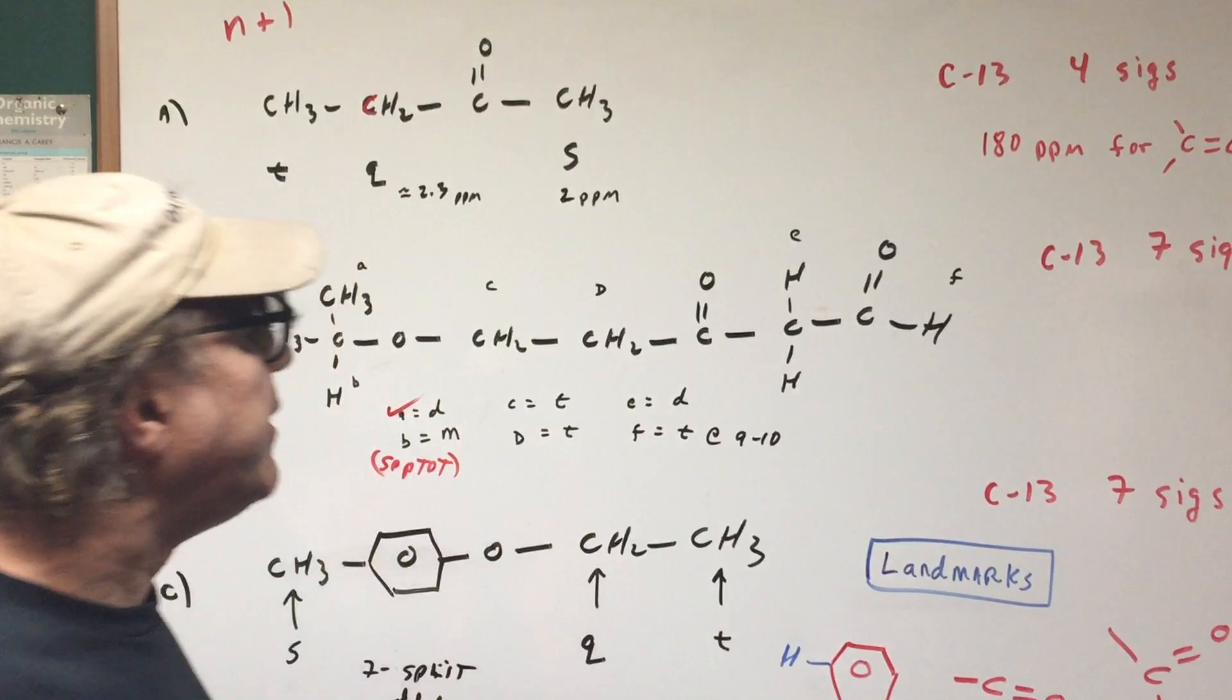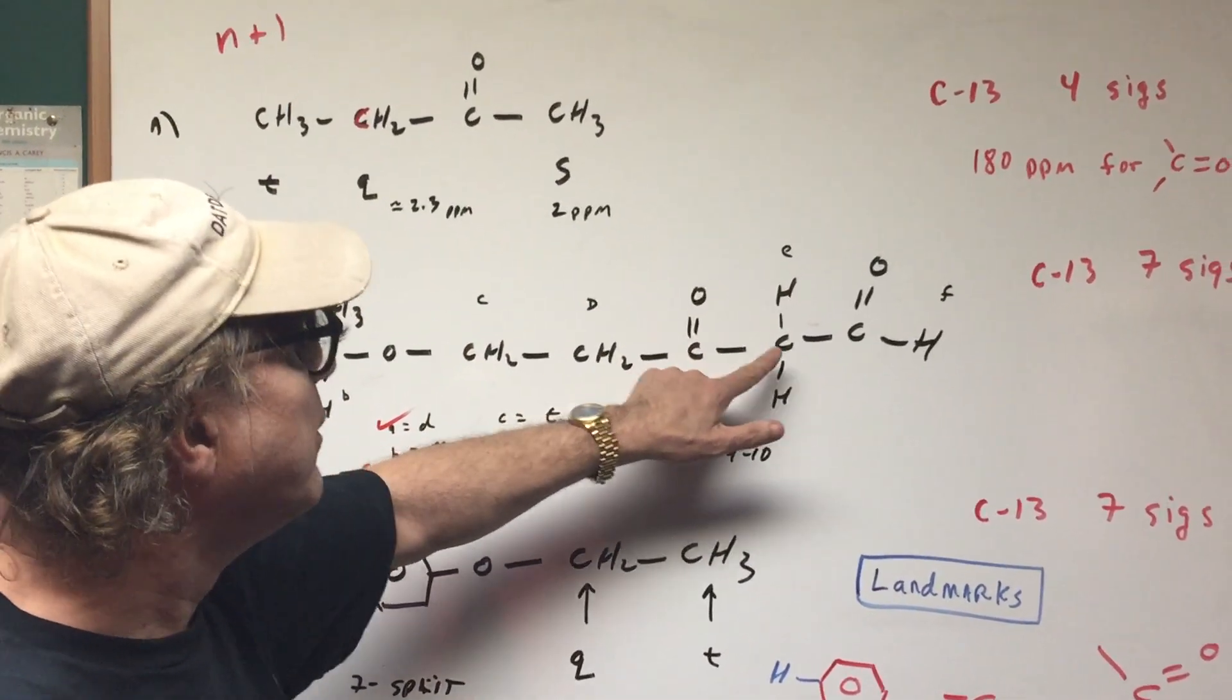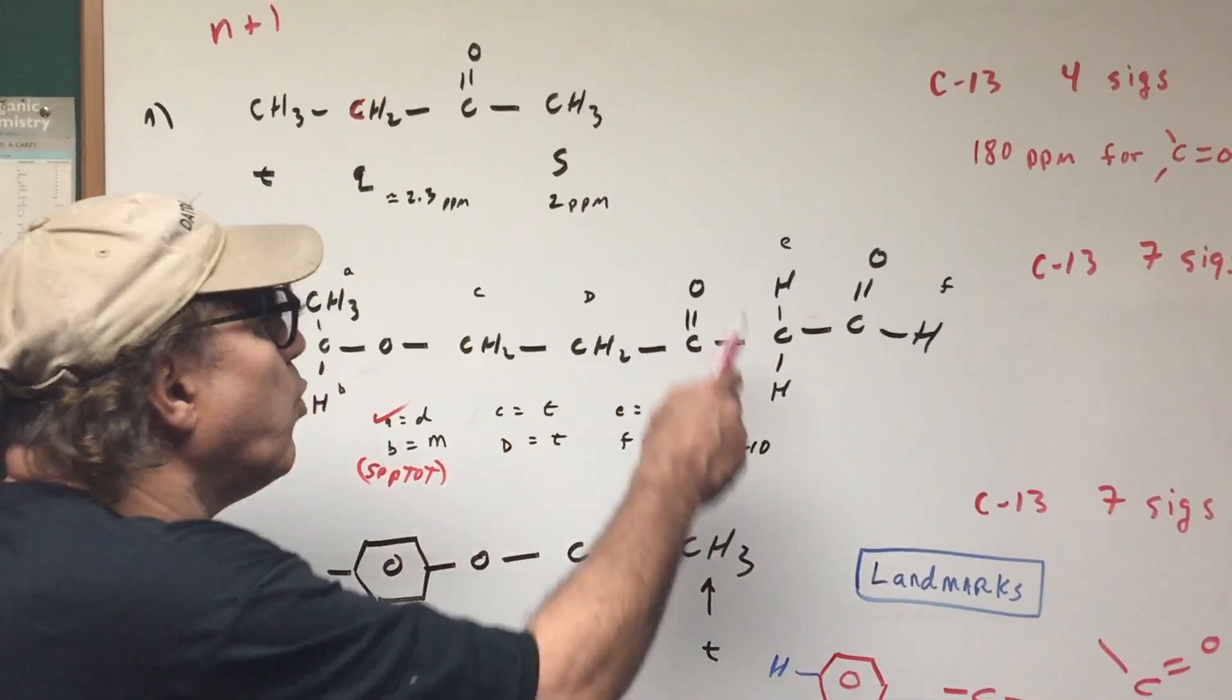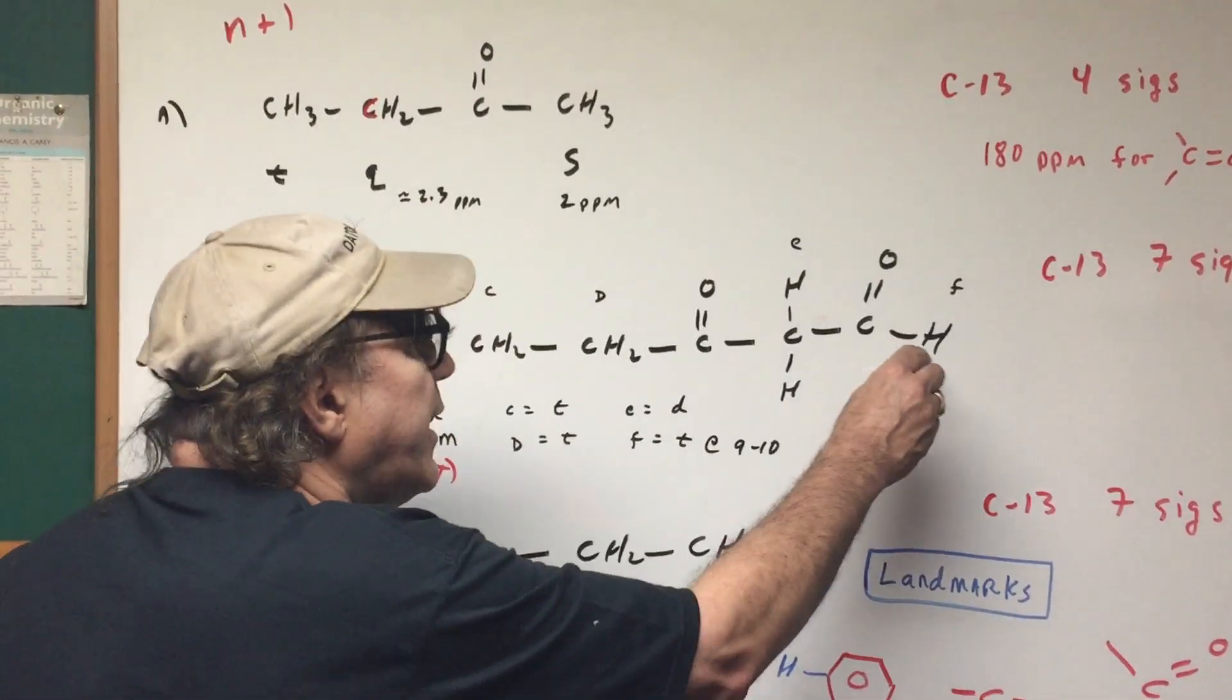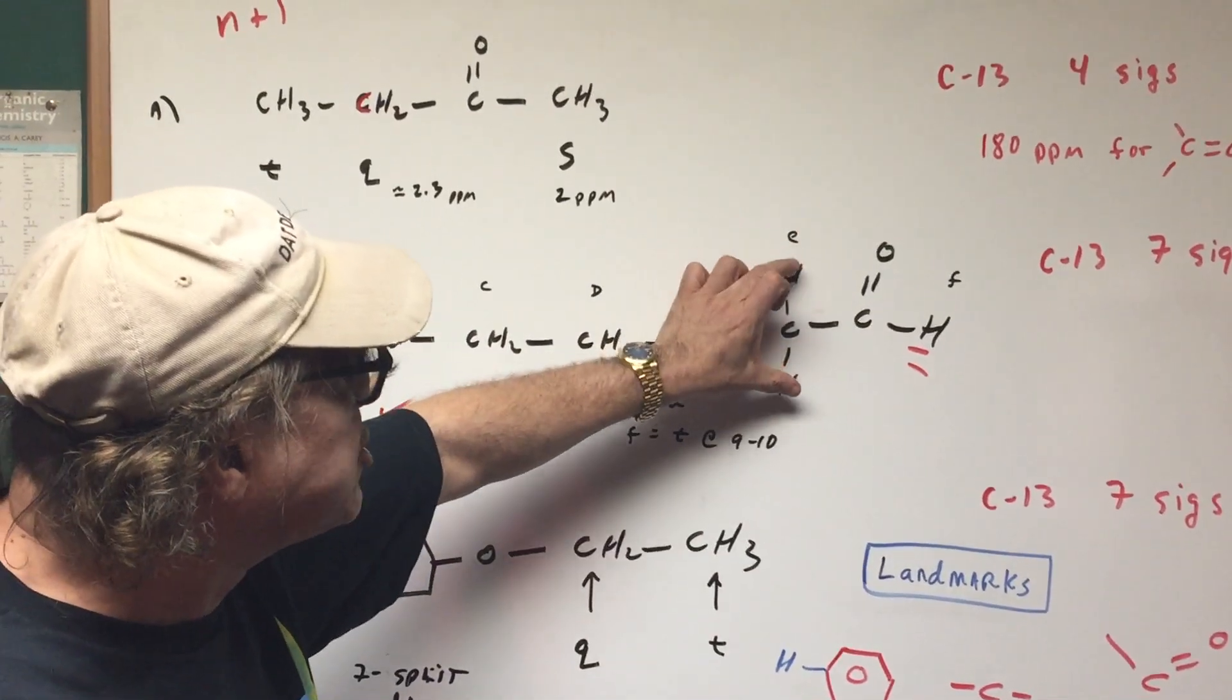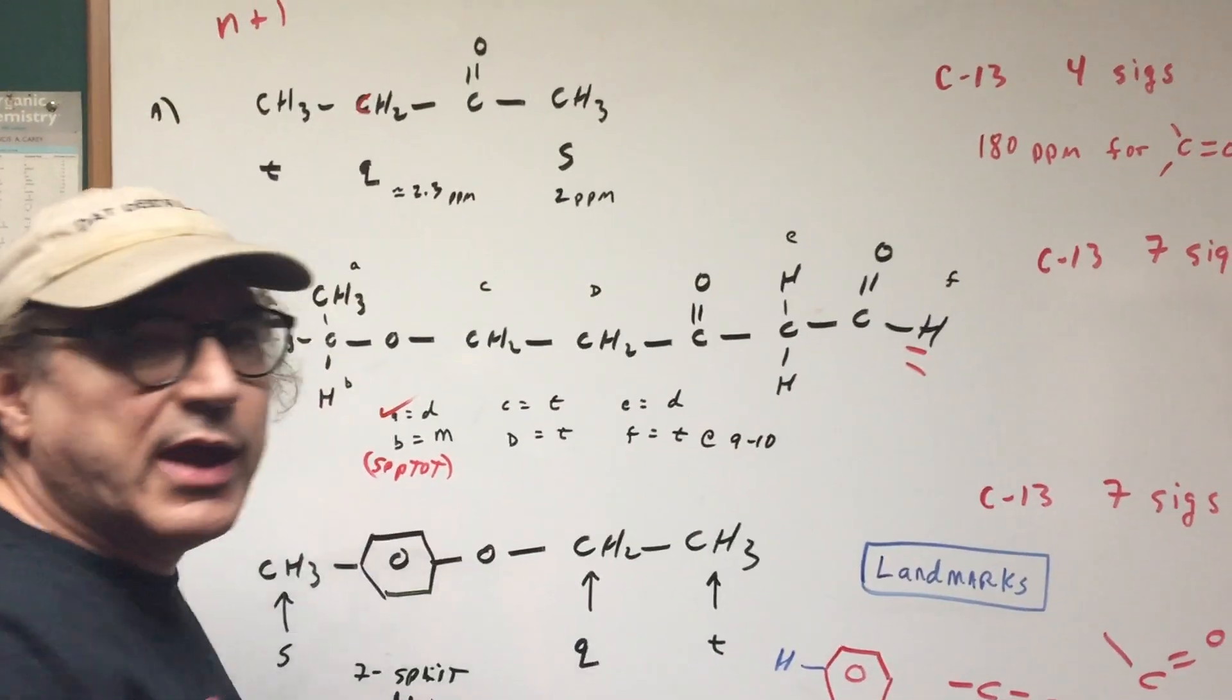If we go to letter E now, those two protons, if you move to the left, there's nothing there. If you move to the right, this carbon has one, so one plus one would give you a doublet. And finally, letter F, the aldehyde proton is next to order two. You jump to your neighbor, two plus one is three, so that would give a triplet.